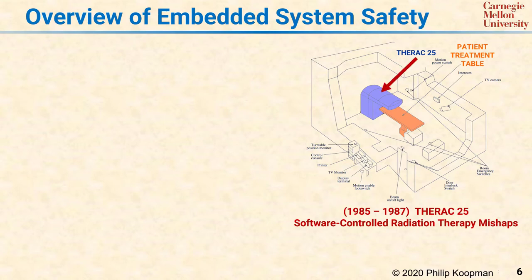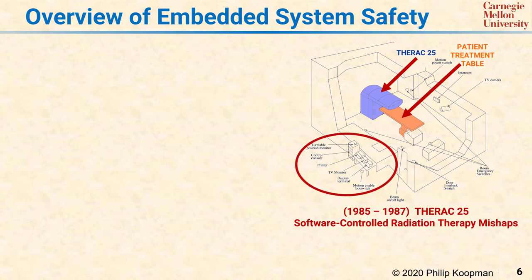The THERAC-25 was a radiation therapy machine designed to treat cancer patients. Unlike previous models, the THERAC-25 gave full safety authority to its software rather than electromechanical interlocks. The software had race conditions and other problems, and in general was poorly designed software that made it unsafe.